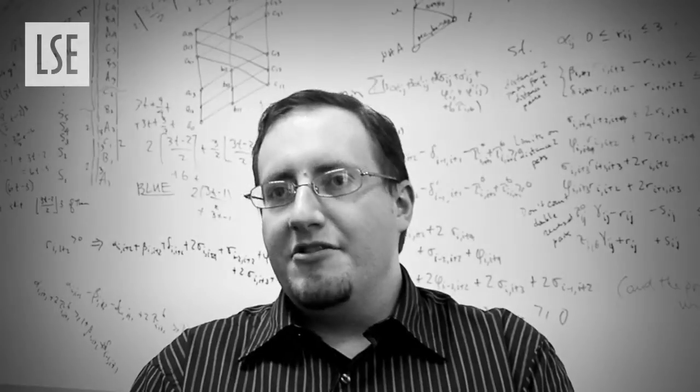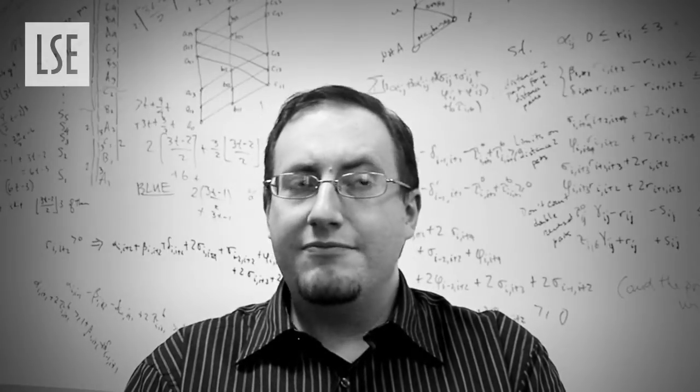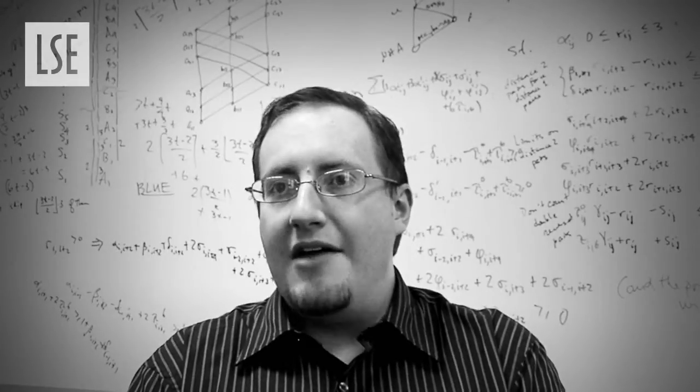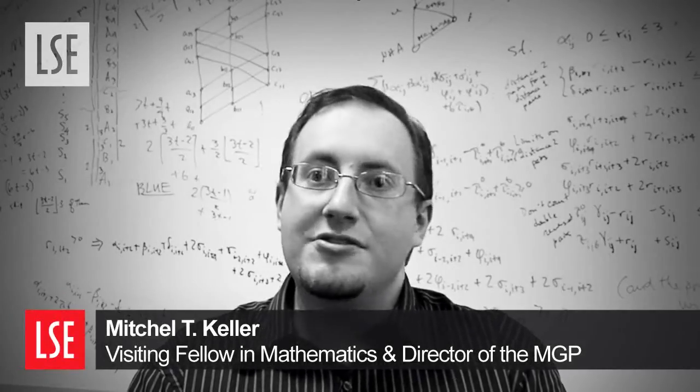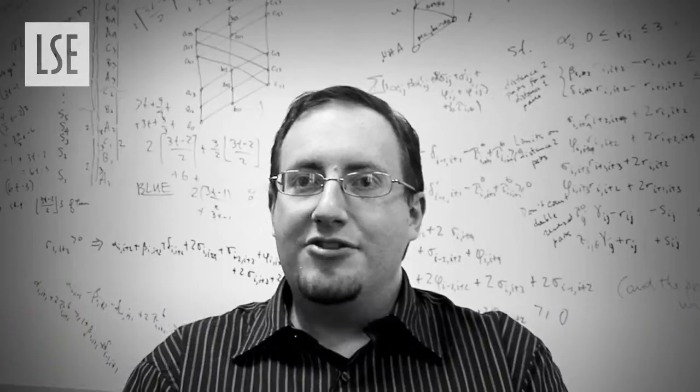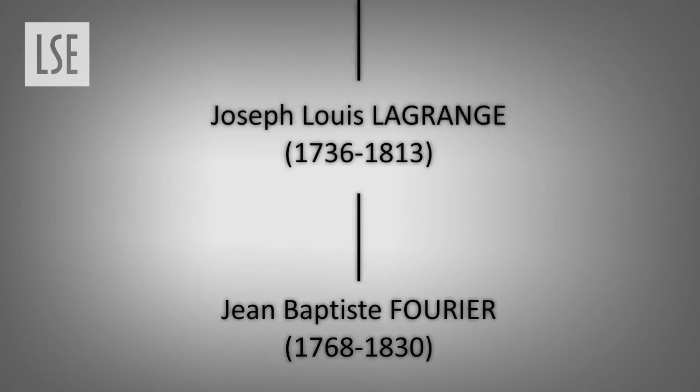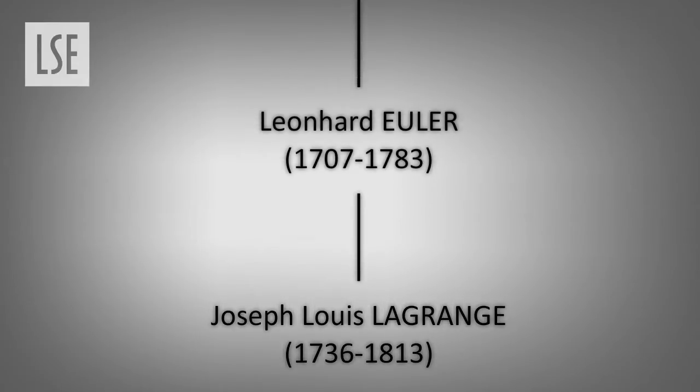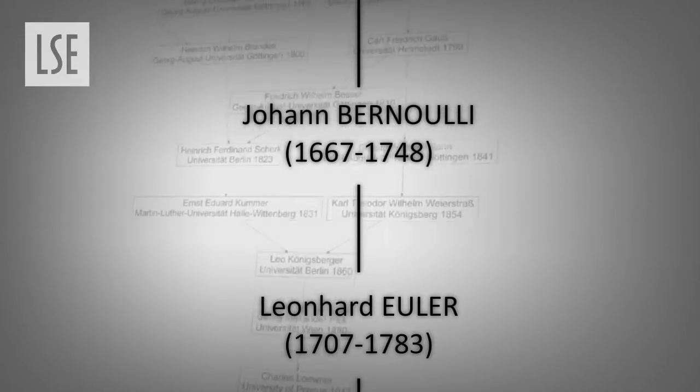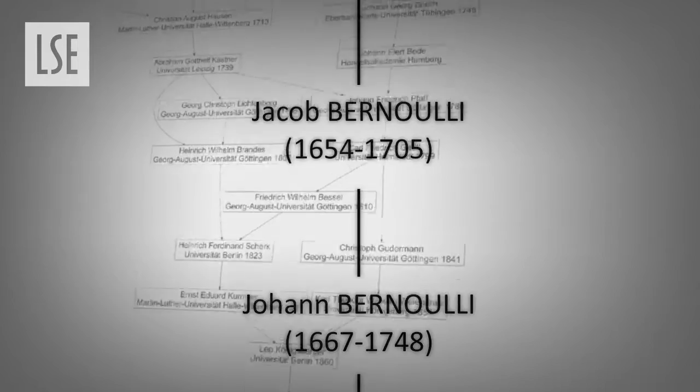So the Mathematics Genealogy Project is a database of nearly 150,000 mathematicians from around the globe going back into the 14th century now where, unlike a traditional genealogy, your supervisor is your parent, your father so to speak, and then his supervisor is your grandmother, and so on.